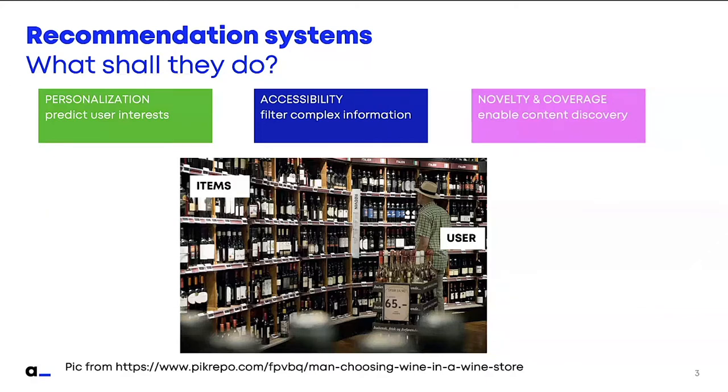The entities that we have are users and items — items being the different wines, and users being the people that go into this shop.